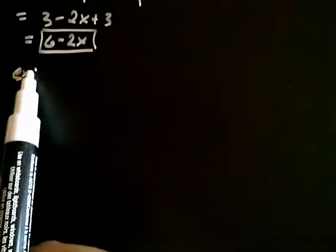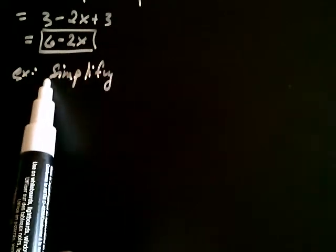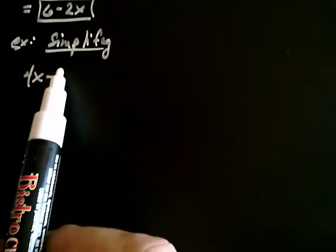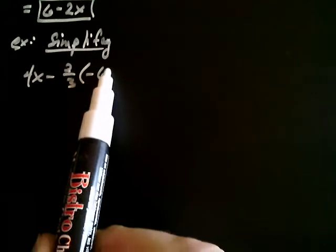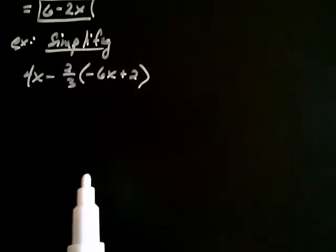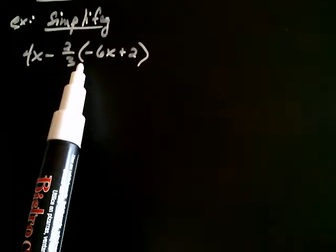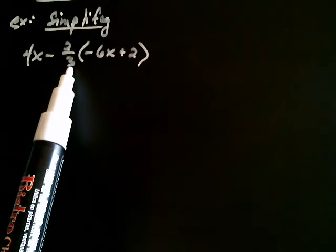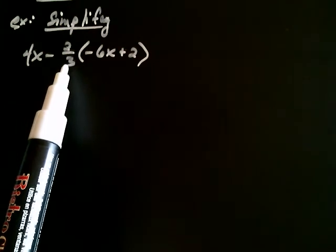Let's simplify another one. Let's say we had 4x minus 2 thirds times, how about, negative 6x plus 2. The same logic applies — when it's multiplication, I can think of the subtraction that follows and the negative as belonging to the 2 thirds. So I'm not going to distribute 2 thirds; I'm going to distribute negative 2 thirds.